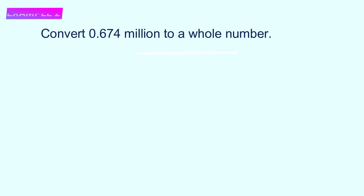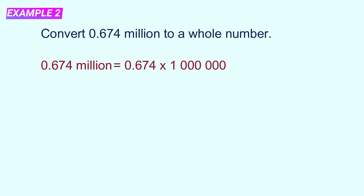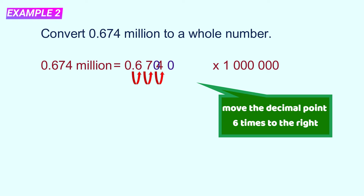Number two: 0.674 million, convert to whole number. Again, multiply with 1 million. Move the decimal point to the right 6 times. The answer is 674,000.